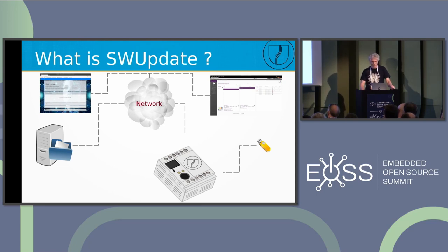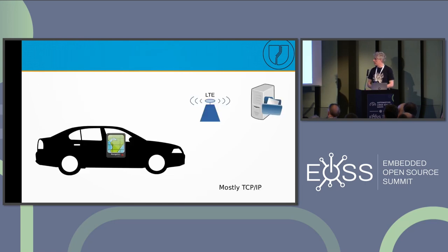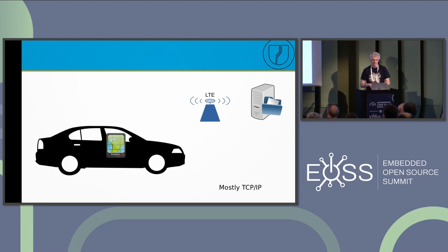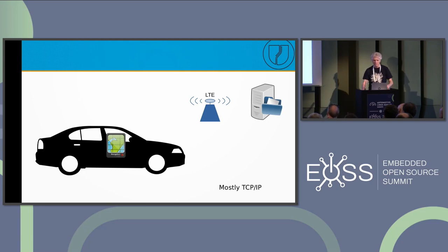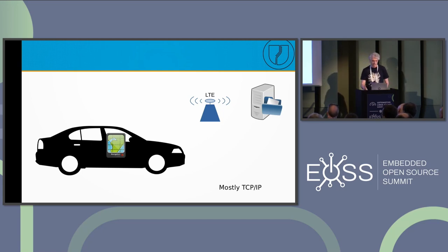Now we have security in SWUpdate. The point is now moving to another type of bus used on vehicles — a CAN bus. SWUpdate was also used on some automotive devices, but really there's no big difference with the standard SWUpdate usage, because the device is still connected via a mobile network like LTE or whatever to an external device, and the networking stack is based on TCP/IP as well.